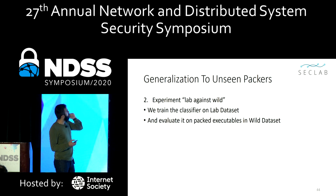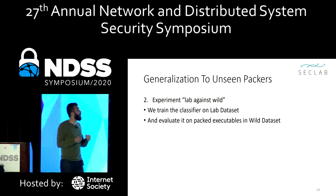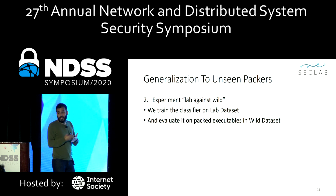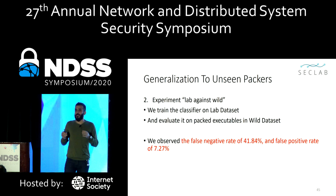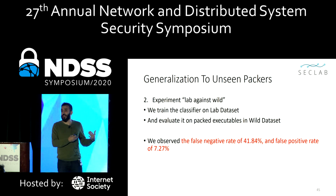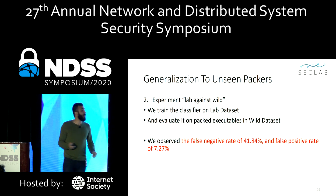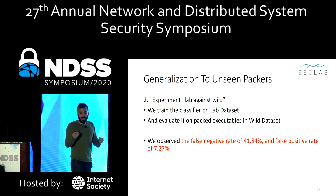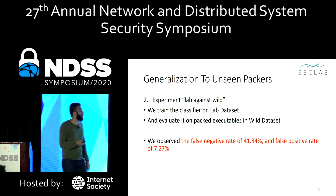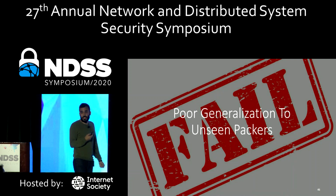In the next experiment, we trained the classifier on the whole lab dataset — all nine packers — and then evaluated it on packed executables observed in the wild dataset. Interestingly, we observed a false negative rate of around 42%. This is quite high. It shows that the features that are useful even in the presence of packing are apparently not useful when we see packing in the wild. These samples are changing the way that these features become not useful anymore. This experiment matters because malware authors often use their own customized packers, not off-the-shelf packers. So we can say that we have poor generalization to unseen packers.